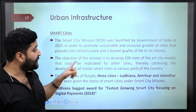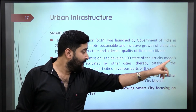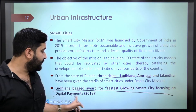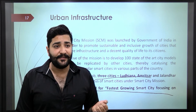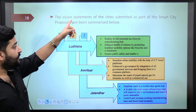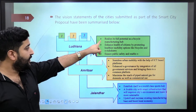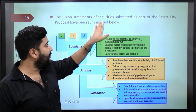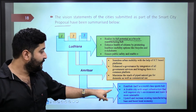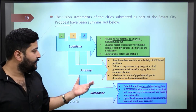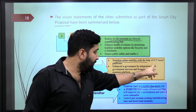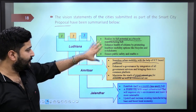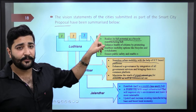Urban infrastructure: under Smart Cities Mission, three Punjab cities — Ludhiana, Amritsar, and Jalandhar — are included. Ludhiana has bagged the award for 'Fastest Growing Smart City focusing on Digital Payments.' The vision statements are important: Ludhiana's potential is to become a bicycle hub; Jalandhar's smart city proposal is to become a sports hub; Amritsar's proposal is seamless urban mobility with ICT and maximizing the reach of piped natural gas.